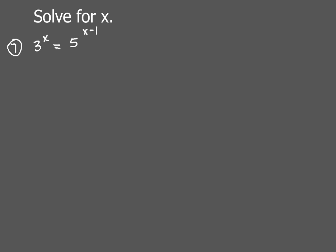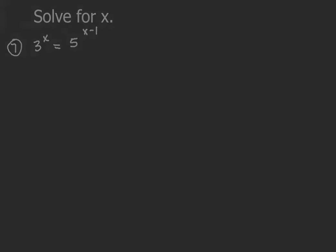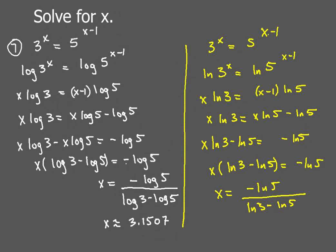So this problem is going to be 3 to the x equals 5 to the x minus 1. All right, go ahead and pause, try and solve this one on your own, and then come back and see how you did. So how'd you do? Hopefully, you are solid on this one, whether you use natural log or common log. Now remember, common log has a base of 10, and natural log has a base of E. But either way, boom, there's how you do it.